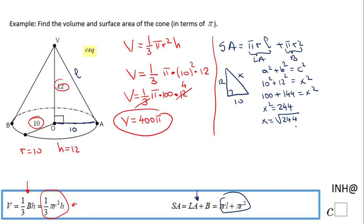That will be in simplified form 2 square root of 61. Now we can go back to this formula. The surface area will be pi times r, where r is the radius 10, times l, which is the slant height we calculated, 2 square root of 61.